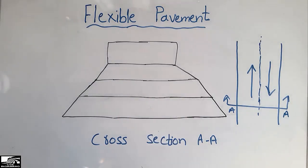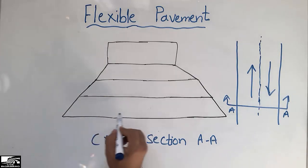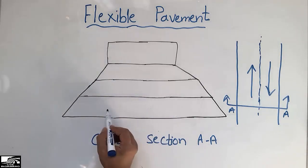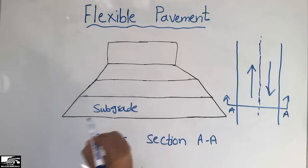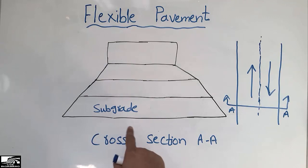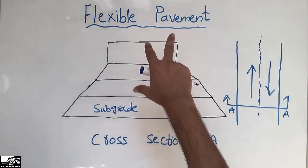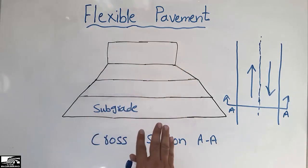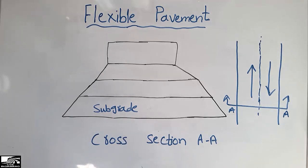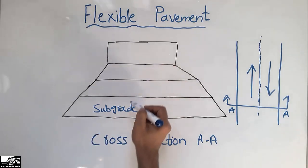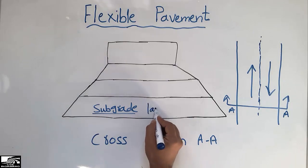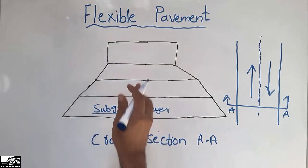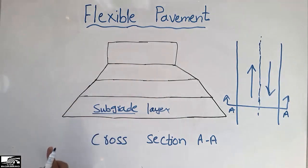To start with the layers: first, the bottom layer of the pavement is the subgrade layer. This is the bottommost layer of the pavement, and the whole load ultimately rests upon it. It must have sufficient stiffness and strength to resist the load properly, because all load eventually reaches this layer.